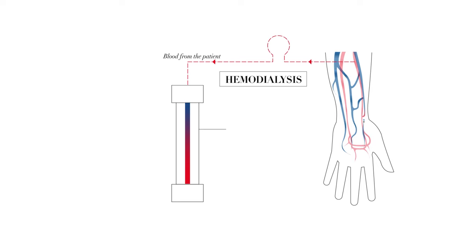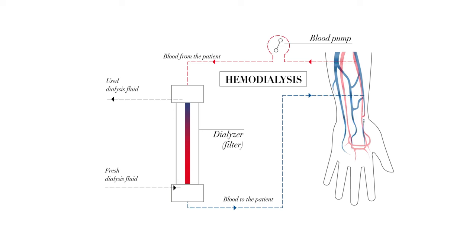The blood is routed through a dialyzer to clean it and is then returned to the patient. The process is controlled by a hemodialysis machine which, amongst other things, pumps the blood and dialysis fluid around the circuit, adds in an anticoagulant, removes excess fluid, and regulates the entire cleaning process.